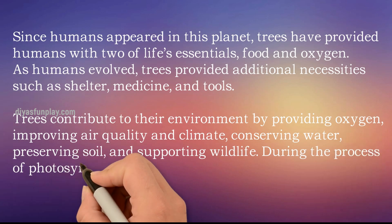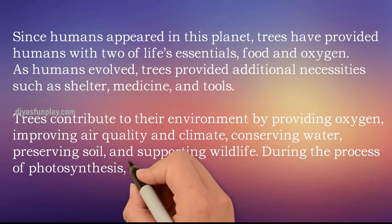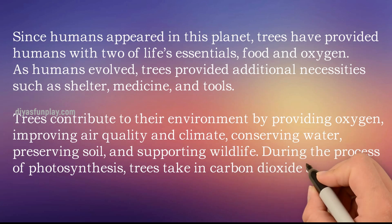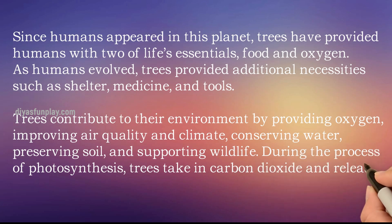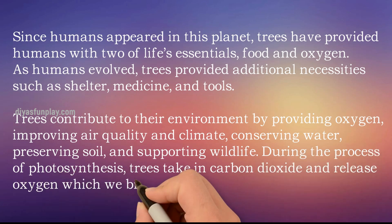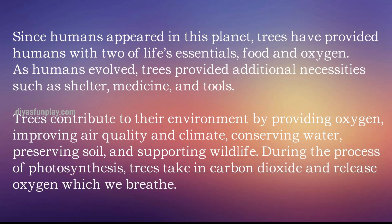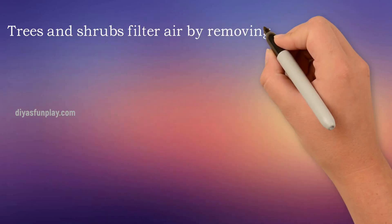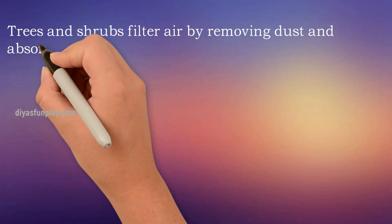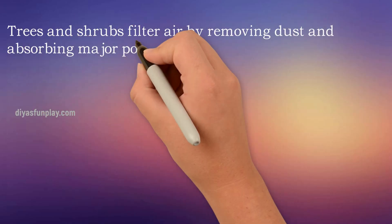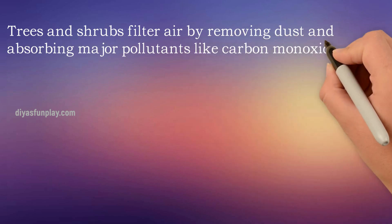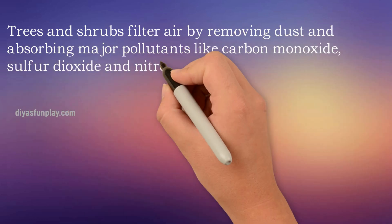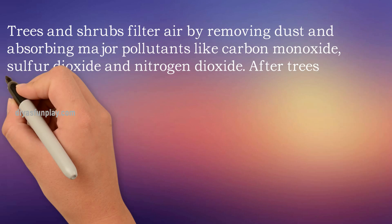During the process of photosynthesis, trees take in carbon dioxide and release oxygen which we all breathe in. Trees and shrubs filter air by removing dust and absorbing major pollutants like carbon monoxide, sulfur dioxide and nitrogen dioxide.